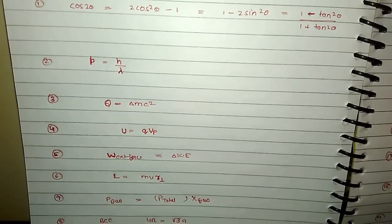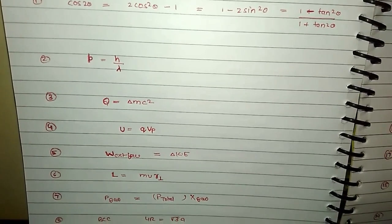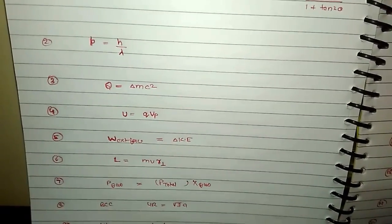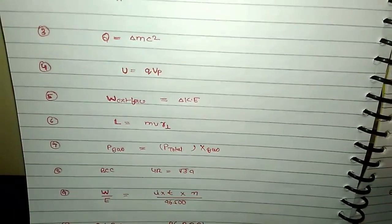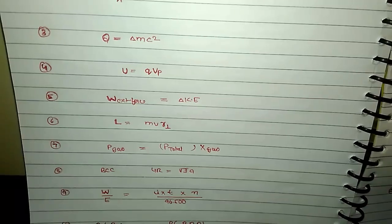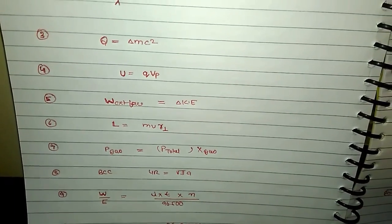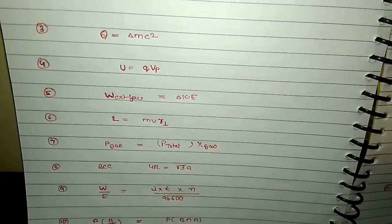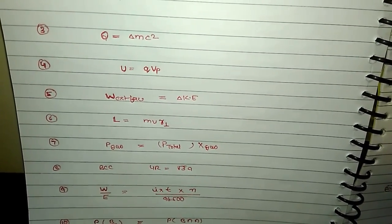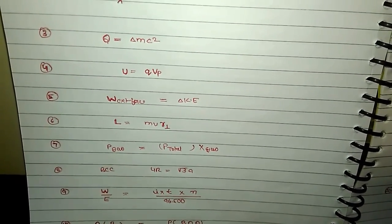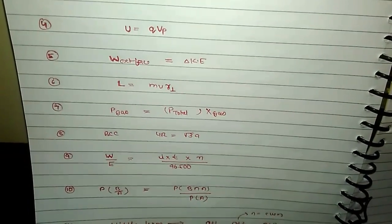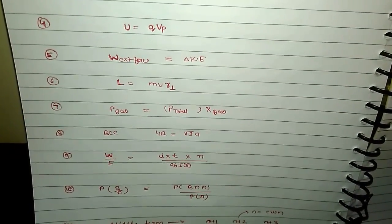Work done by external force = change in kinetic energy. Angular momentum: m and v are perpendicular. Partial pressure of a gas: p_gas = p_total × x_gas (mole fraction).